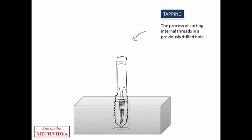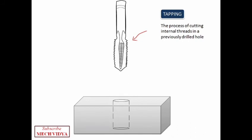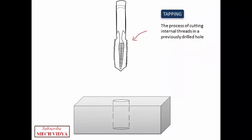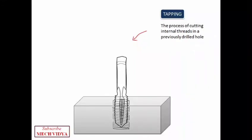Now what happens is that when it rotates and when it is fed against the fixed workpiece it cuts internal threads in the holes. So this was all about the drilling operations.